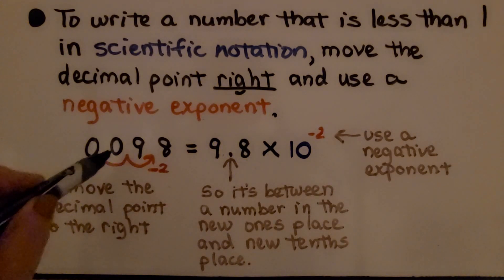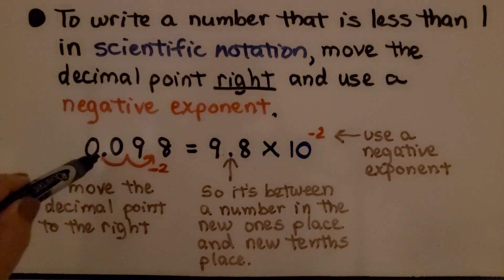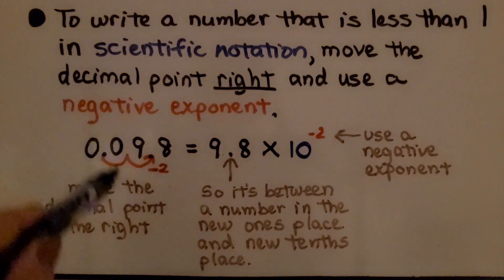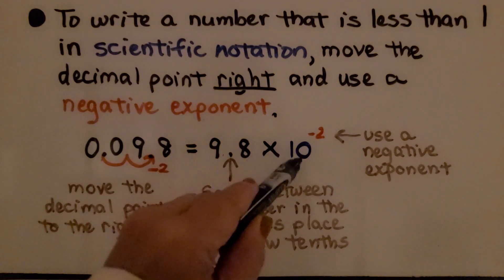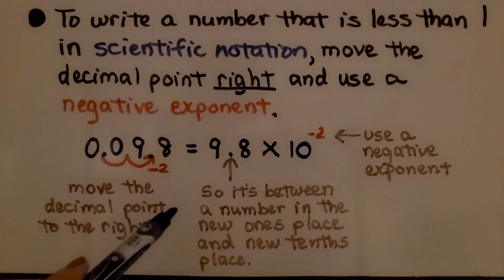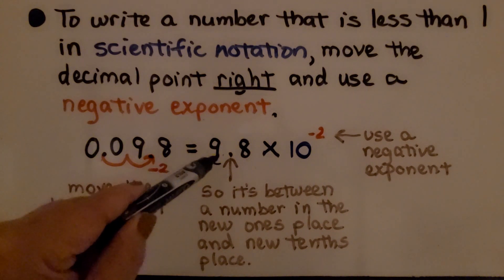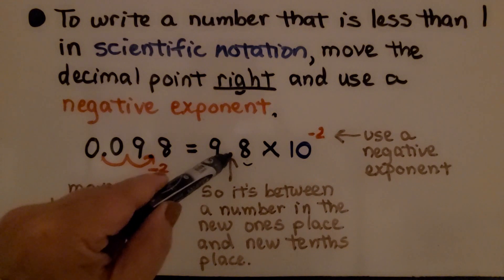We have 0.098. To write it in scientific notation, we move the decimal point right — one, two hops. It's going to be 9.8 times 10 to the negative second power. We move the decimal point to the right so it's between the number in the new one's place and the new tenth's place.